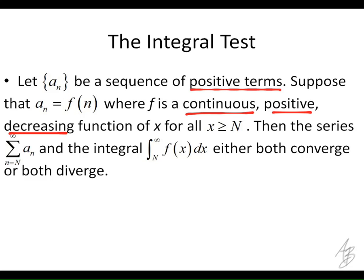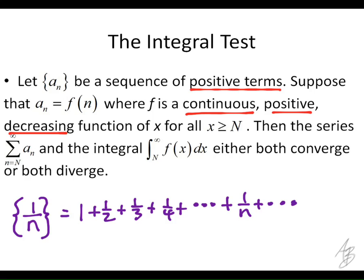So here's an example that will kind of distinguish the difference between these two. The sequence might be the sequence of numbers 1 over n, which is the harmonic series. Harmonic series is 1 plus 1 half plus 1 third plus 1 fourth plus 1 over n, and so on. What we're going to do is we're going to use a function to represent this series. So we would say for this particular series, we'll say that f of x or f of n is equal to 1 over x.